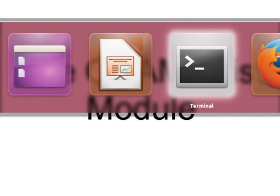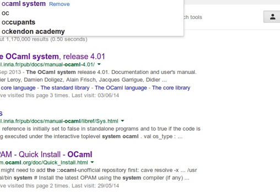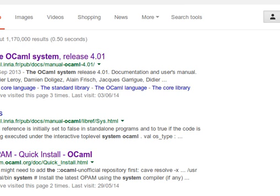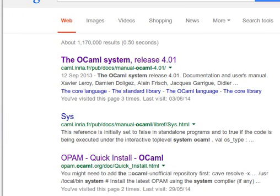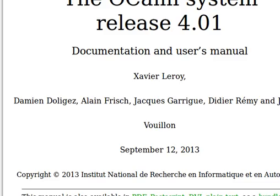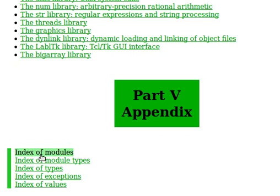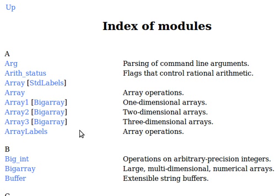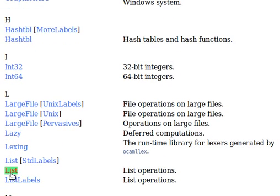If you remember, we need to go to the OCaml system. As you can see here, we have a list of modules at the very bottom. If you go to the bottom, we have an index of modules, and then they are sorted alphabetically, and then we can go to L and List.